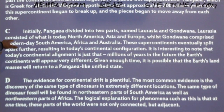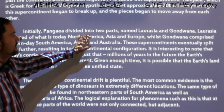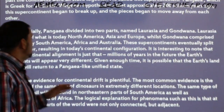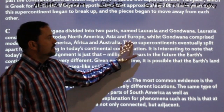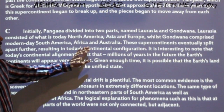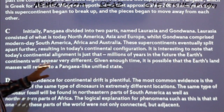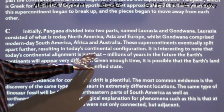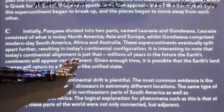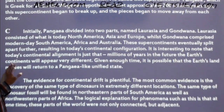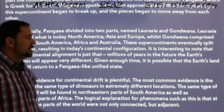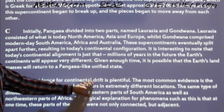Paragraph C: 'Initially, Pangea divided into two parts named Laurasia and Gondwana. Laurasia consisted of what is today North America, Asia, and Europe, whilst Gondwana comprised modern-day South America, Africa, and Australia. These supercontinents eventually split apart further, resulting in today's continental configuration. It is interesting to note that today's continental alignment is just that — millions of years in the future, the Earth's continents will appear very different. Given enough time, it is possible that the Earth's landmasses will return to a Pangea-like unified state.'